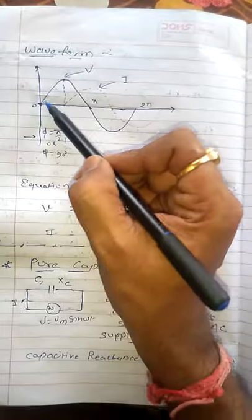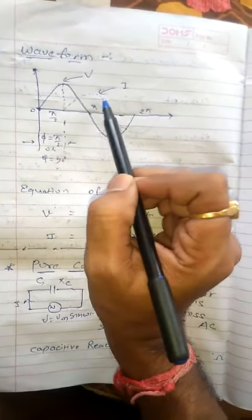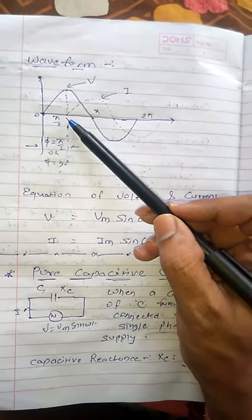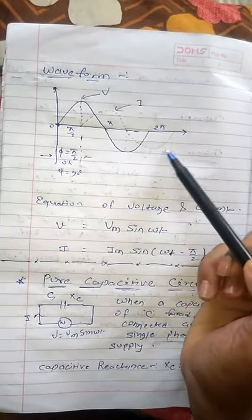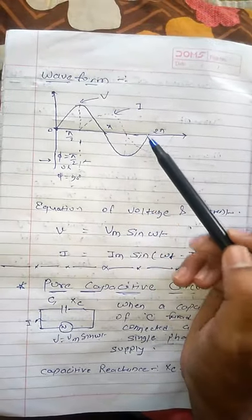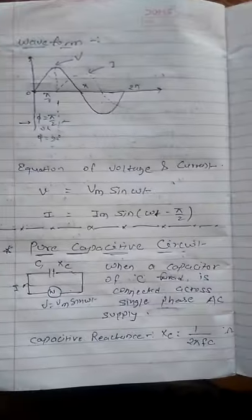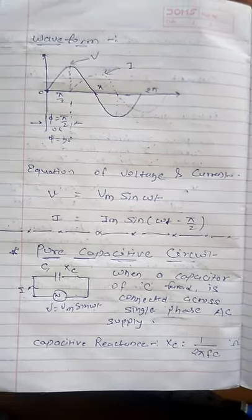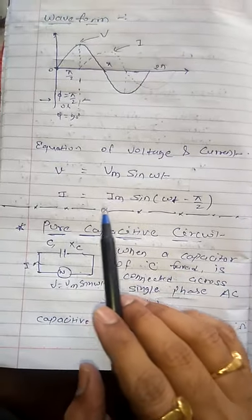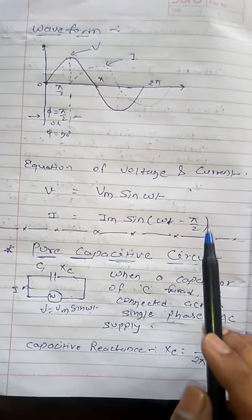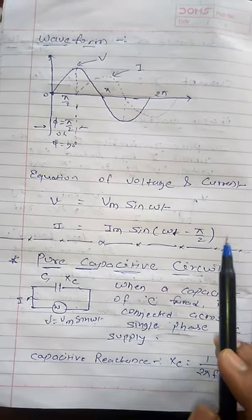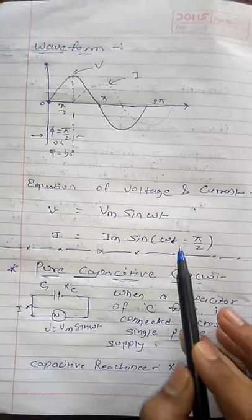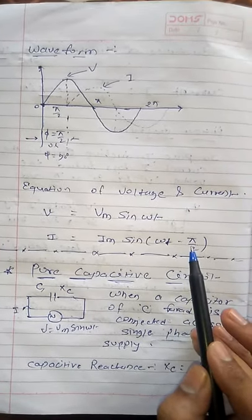Next is the waveform. With respect to the voltage waveform you provide as the supply, you need to draw the current waveform. Since current is lagging by 90 degrees, it starts 90 degrees behind. As shown by the dotted line, the current waveform is drawn accordingly. The equation of voltage is V is equal to Vm sin(ωt). For current: I is equal to Im sin(ωt − π/2), because current lags by 90 degrees — the minus sign indicates lagging, and π/2 radians equals 90 degrees.